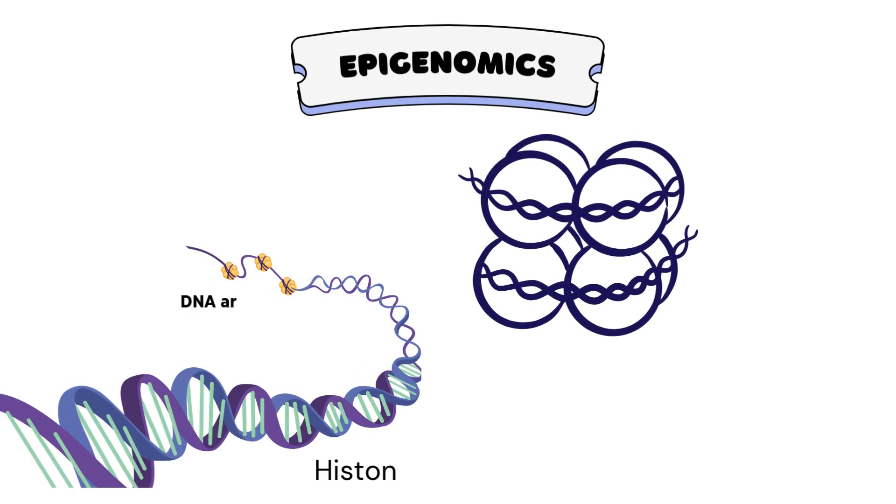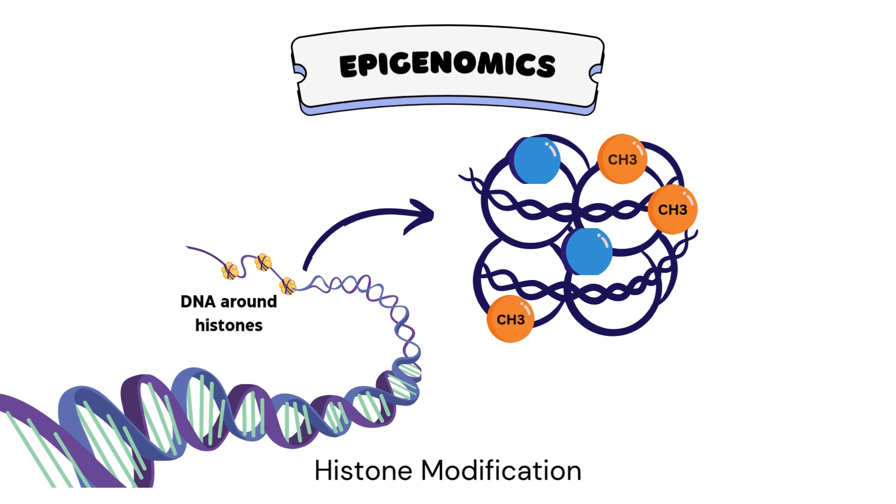The other is histone modification, in which chemical groups are added to the histone proteins around which DNA is wrapped. Cells detect these chemical groups to decide whether a specific region of DNA should be read or ignored. These modifications can sometimes persist through cell divisions and in some instances be inherited across generations.